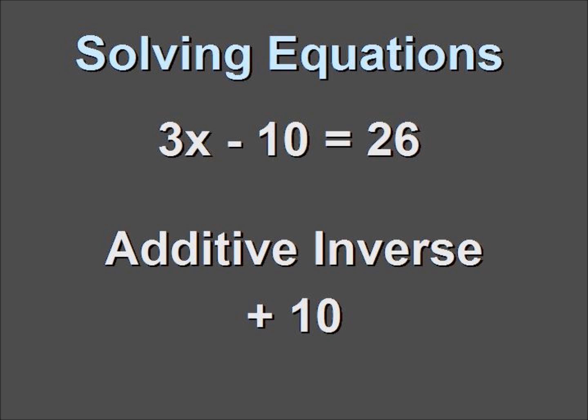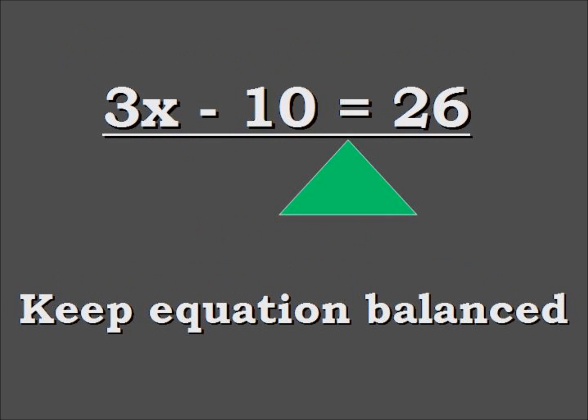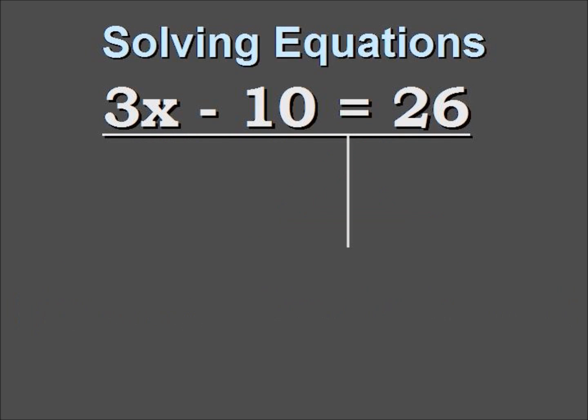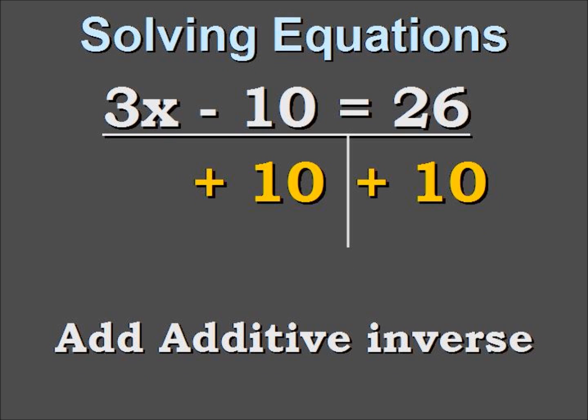We have the additive inverse. The additive inverse of negative 10 is positive 10. We're going to add positive 10 to both sides of the equation, and the equation must stay balanced. We add the positive 10 under the negative 10 and the positive 10 under the 26.